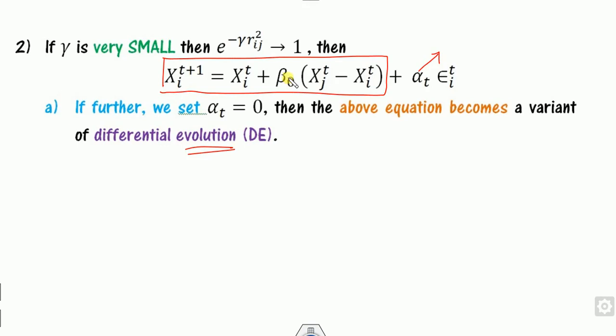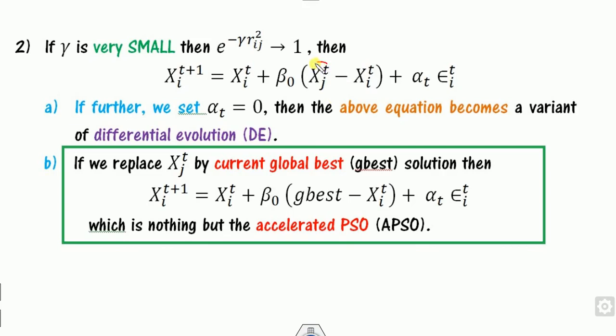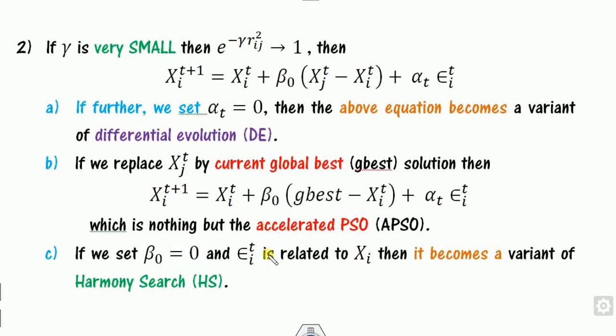If xj(t) is replaced with the global best g-best, the equation becomes the accelerated PSO — not the standard PSO, since standard PSO also requires the personal best p-best. On the other hand, if beta-naught is set to zero, and the random component uses xi, the equation reduces to xi(t) plus alpha(t) times the random term, which is nothing but the harmony search algorithm.